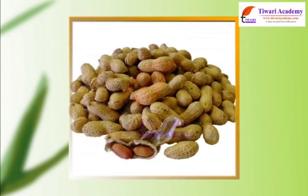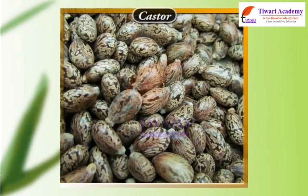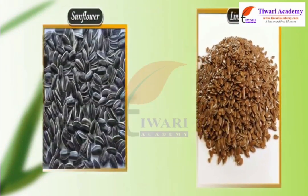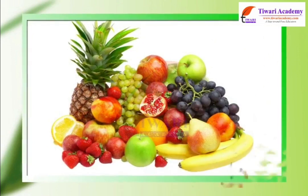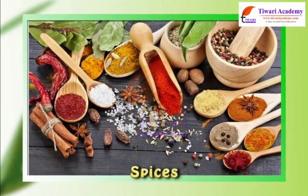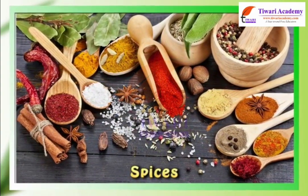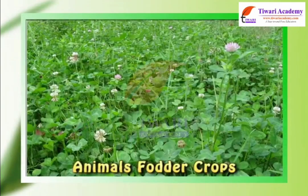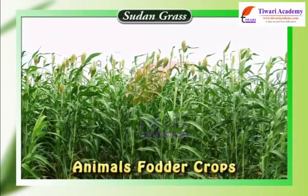While some oil seeds like groundnut, sesame, castor, mustard, linseed and sunflower provide us with necessary fats. Likewise, fruits, vegetables and spices provide a range of vitamins and minerals in addition to small amounts of proteins, carbohydrates and fats. For animals, some fodder crops like barseem, oats and Sudan grass are raised as food.